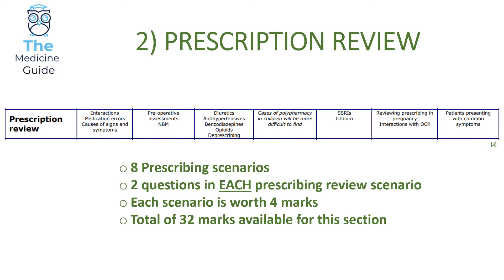The second section is prescription review, with 32 marks available across eight scenarios, each worth four marks. Each scenario has a part A and part B. You'll be given a list of medications including their doses, frequency, and route, and you have to review the list with respect to the particular scenario.